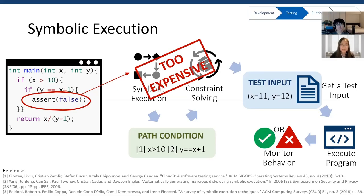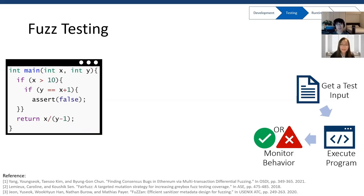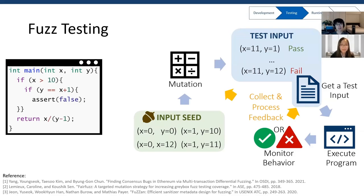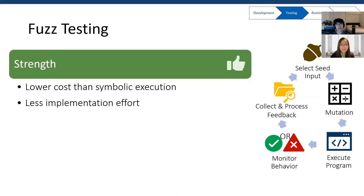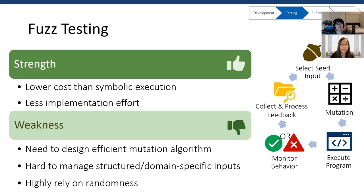To solve this problem, fuzzing appears. It randomly generates test inputs and saves time for code analysis. Different from symbolic execution, it now works in a loop: after executing a test, it collects and processes feedback. Based on the feedback, it applies random mutations on the input to get a new test input and loops again. The key challenge is how to mutate data — it is even more challenging to mutate structured and domain-specific data. In summary, fuzzing has lower cost and less implementation effort than symbolic execution, but it is challenging to design an efficient mutation algorithm and manage structured inputs. Also, it highly relies on randomness, lacking reasoning.